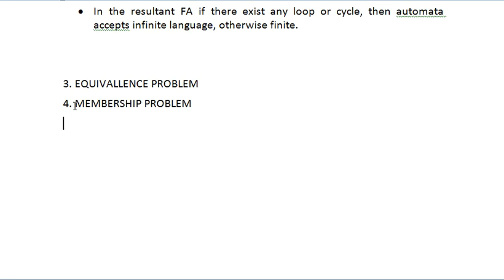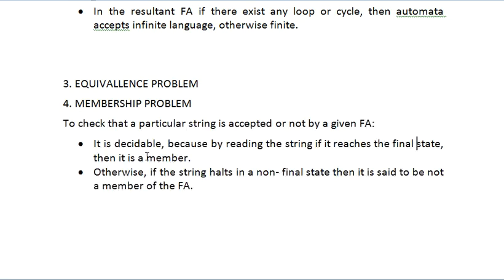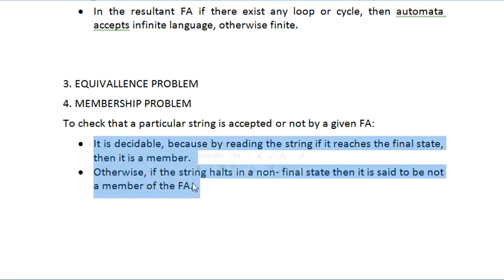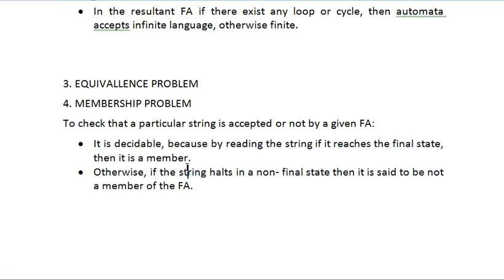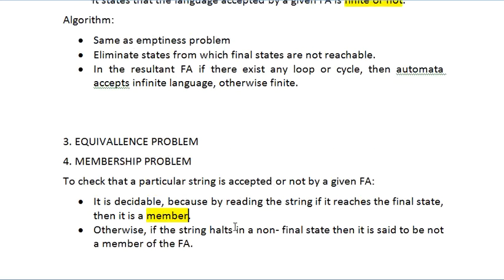The algorithm for the membership problem has two steps. First, read the string — if the automaton reaches the final state at the end of the string, it is a member of the language accepted by the finite automaton. Second, if the string ends in a non-final state, then it is not a member of the language. This is why the membership problem is decidable — there is a clear algorithm for it.